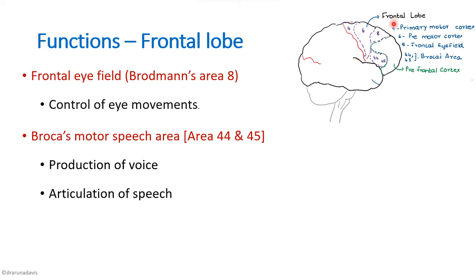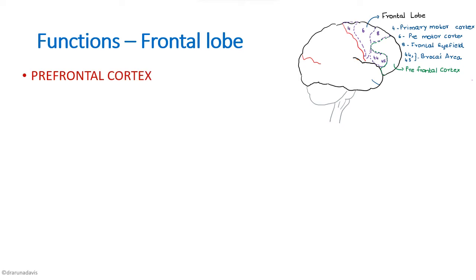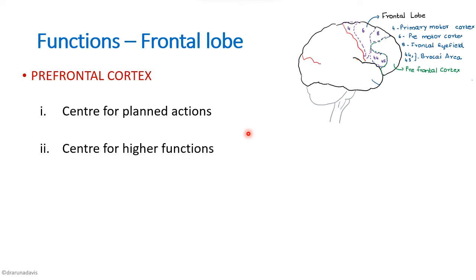The prefrontal cortex is considered the center for planned action because it works in close association with the motor cortex and plans complex patterns and sequences of motor movements. It is also the center for higher functions — emotions, learning, and memory are controlled by the prefrontal cortex. Autonomic changes that occur during emotional conditions arise because of the connection of the prefrontal cortex with the hypothalamus and the brainstem.